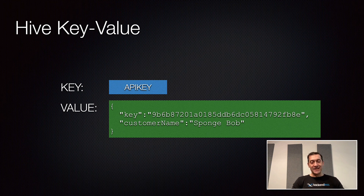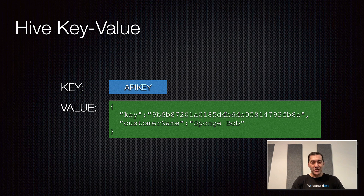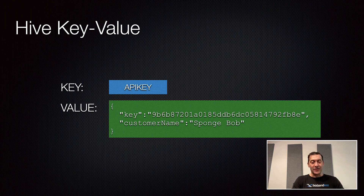Let's talk about the first one, which is key-value. Here you see that there is a key — for instance, the name of that key is "API key" — and the value is, in this case, a JSON object. You can retrieve that value using an API call and you will get the value that corresponds to that key.